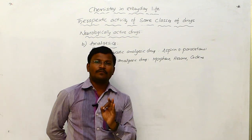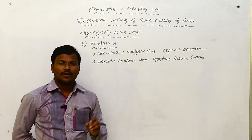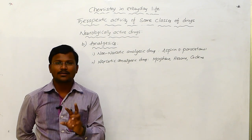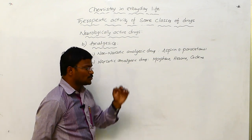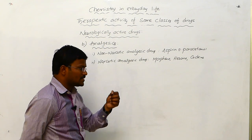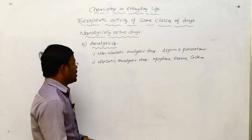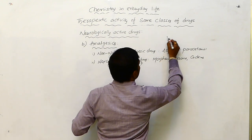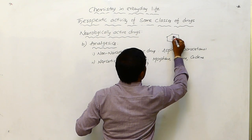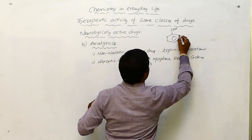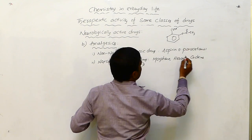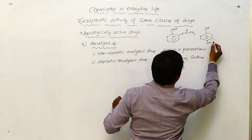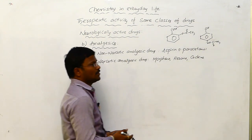Similarly, aspirin can dilute the blood. Due to this, aspirin is also used in case of hypertension or heart conditions. Aspirin is used to decrease the density of blood. The structure of aspirin is: O, C double bond O, CH3. This is the structure of aspirin. Whereas the structure of paracetamol is: OH, NH, C double bond O, CH3. This is the structure of paracetamol.